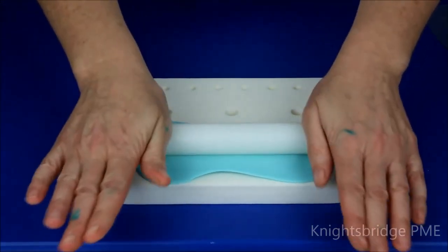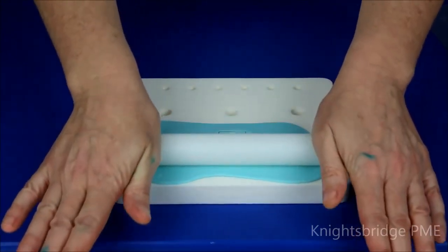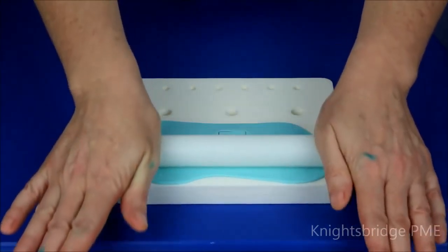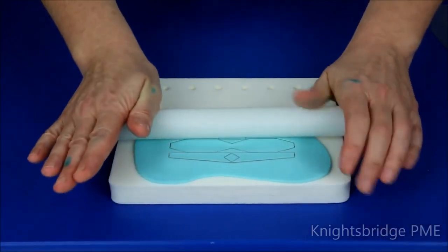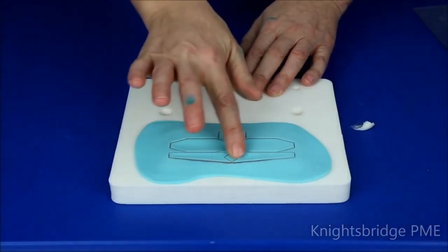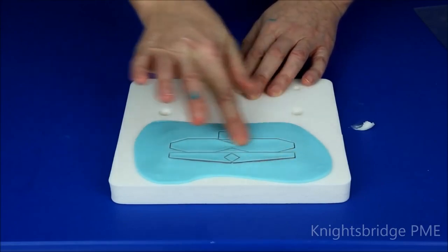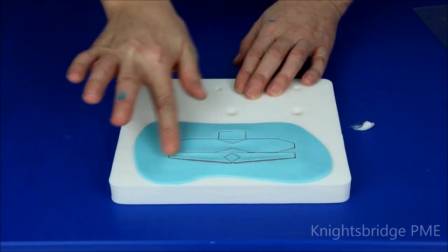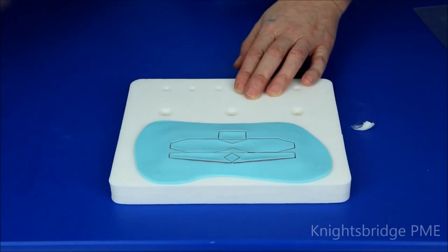You can see that's defined straight away through there. Just run my finger around there just to make sure that I've got a nice clean cut edge right the way around. If you need to, you can just replace your rolling pin across there if you feel you need to.